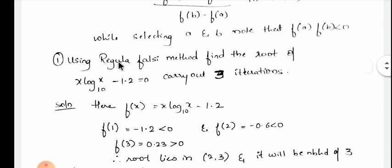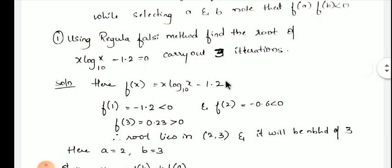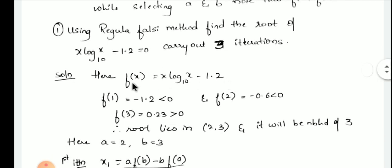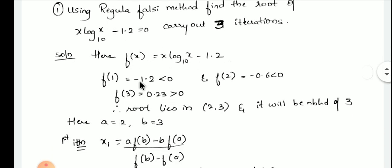First example: using the Regula Falsi method to find the root of x·log(x) base 10 minus 1.2, which is equal to 0. Here I have to carry three iterations. The given equation we call it as f(x). Now we have to find a and b.